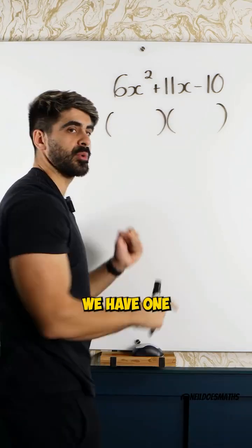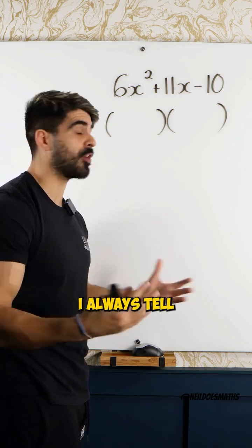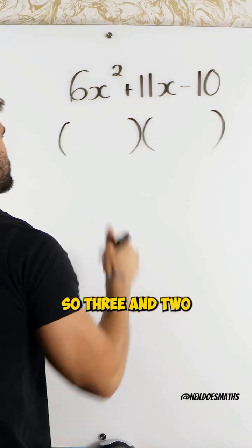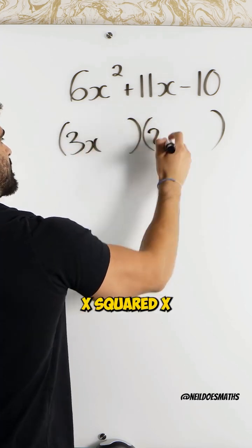We have to think about 6. We have 1 and 6, 2 and 3. I always tell my students to pick the numbers which are closest together first. So, 3 and 2. What multiplies to give you x²? X and x.